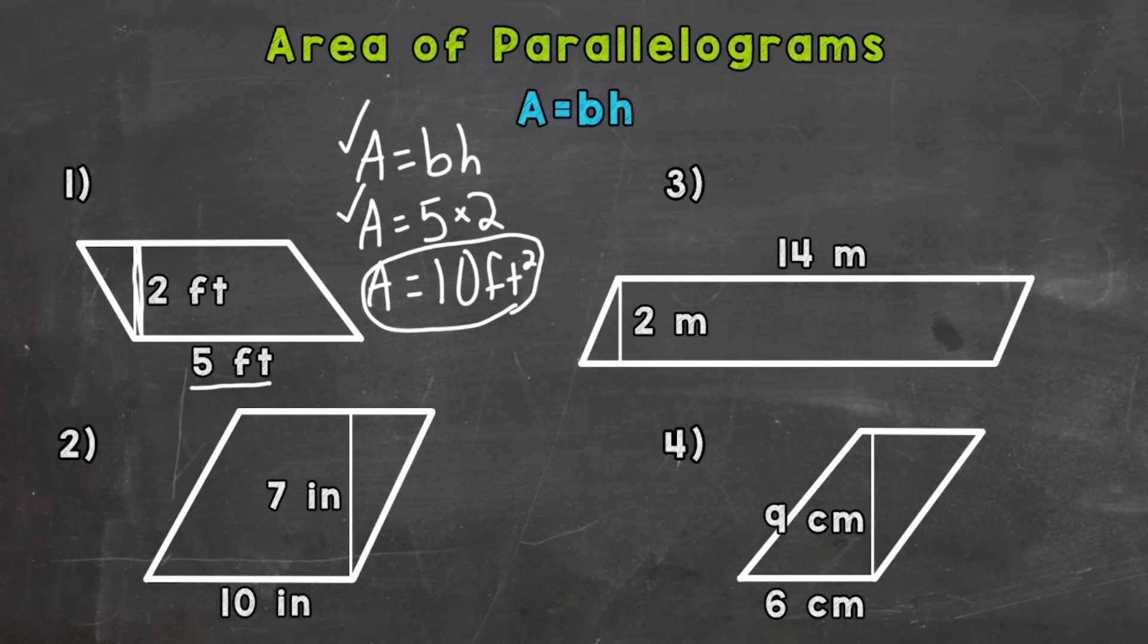So when we take a look at a parallelogram, it kind of looks like a rectangle. It just doesn't have those four 90 degree angles. And when we find the area of a rectangle, we either use area equals base times height or length times width. So essentially we're doing the same thing here, and this is how it works.